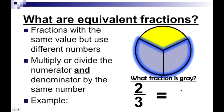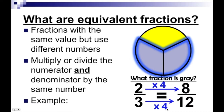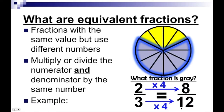What fraction is gray? We still have two-thirds. But what if I multiply the numerator and denominator by four? That's going to give me two times four is eight, three times four is twelve — so that gives me eight-twelfths. That means twelve total pieces, of which eight are gray: one, two, three, four, five, six, seven, and eight.